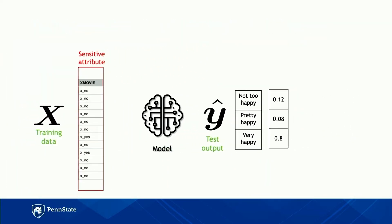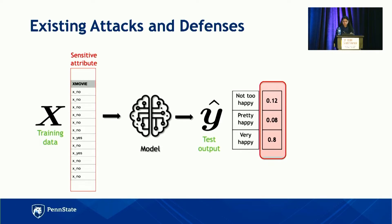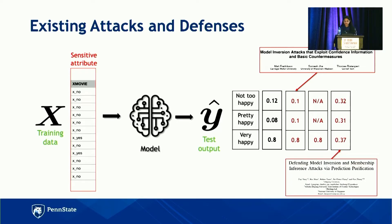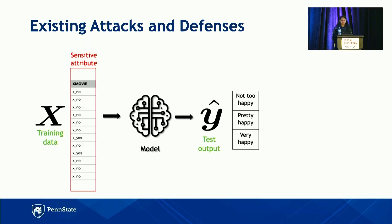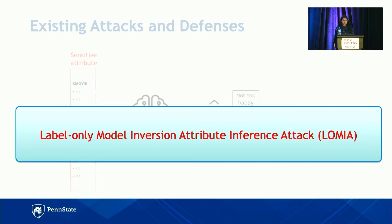Let's take a closer look at the existing attacks and defenses. If we look at the existing attacks, they heavily depend on the confidence scores output by the model. In response, there has been research proposing defenses — one proposes reducing the precision of confidence scores, some propose removing confidence scores and just revealing the highest one, and there are also defenses that perturb confidence scores so the adversary cannot perform a gradient-based attack. What we did was ask: what if the model does not output confidence scores at all and only the labels? So we designed a label-only model inversion attribute inference attack, which assumes the least access or least knowledge of the adversary. We call this attack LOMIA.